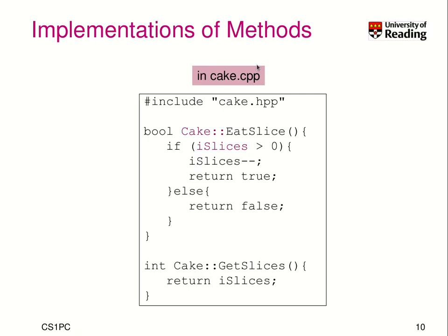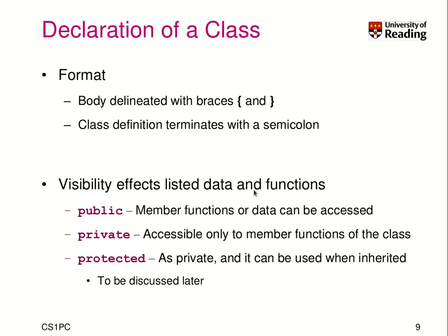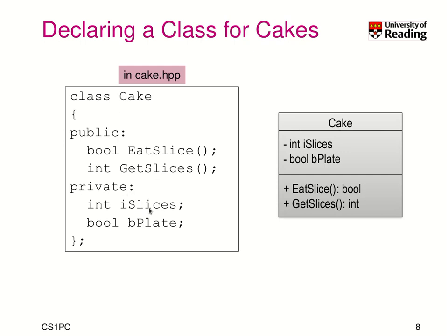Now we have to implement methods, so we create a CPP file — a C++ file. Here we declare the functions, our methods, that we want to implement. We should include the class definition first so the compiler understands what implementations are needed. Afterwards we find the signatures of our functions. eatSlice returns boolean. Here is the body, defining our function with all the code needed. Inside, we can access variables of the class — we can access iSlices, which is a private variable in the class declaration.